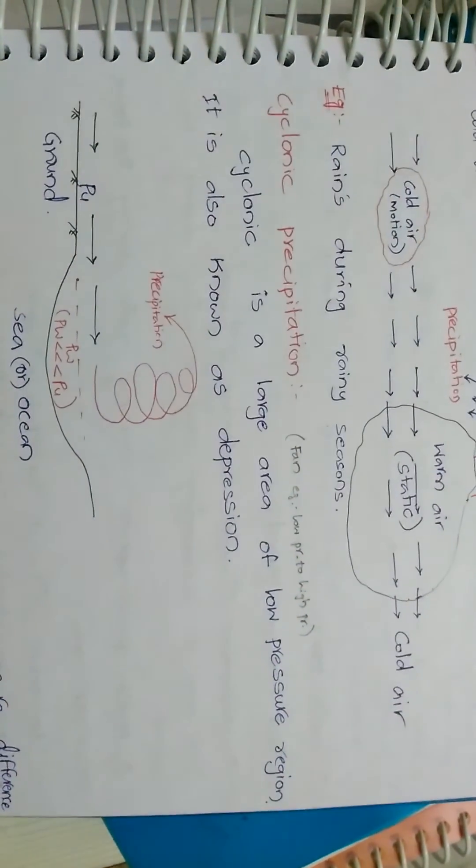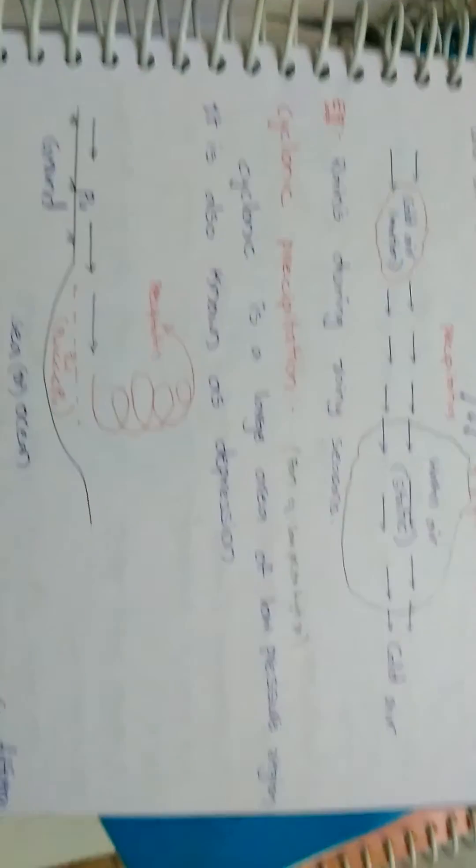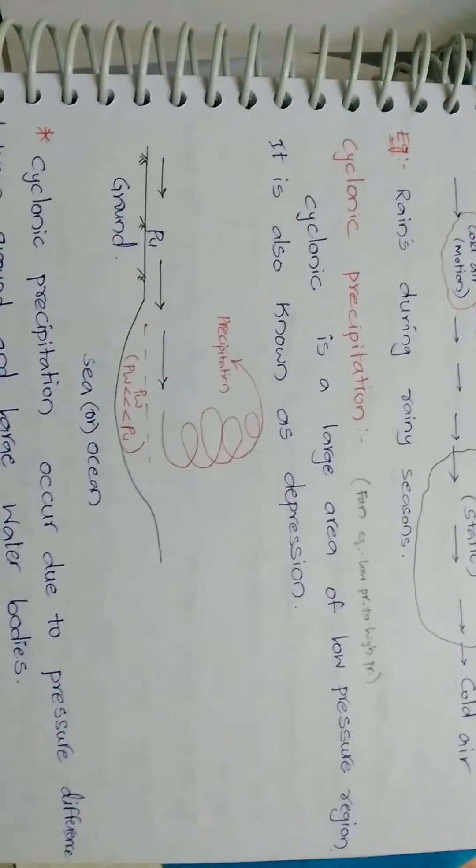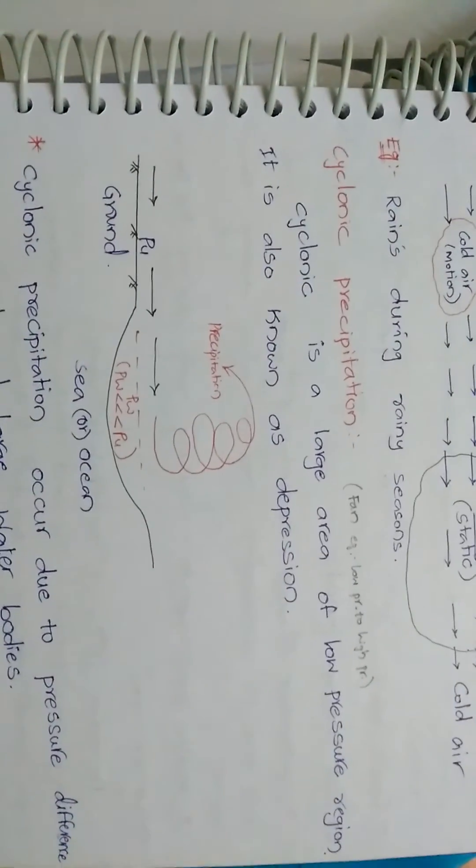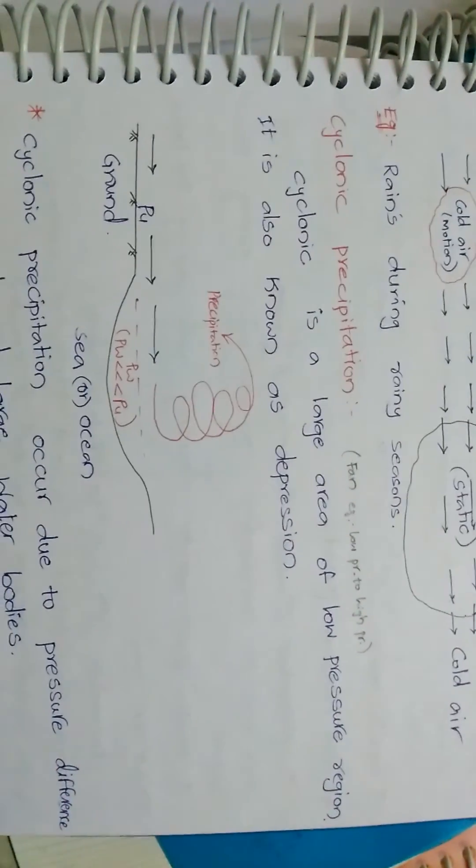Cyclonic precipitation is the large area of low pressure region. It is also known as depression. The cyclones come from different places and heat the objects and produce the precipitation.